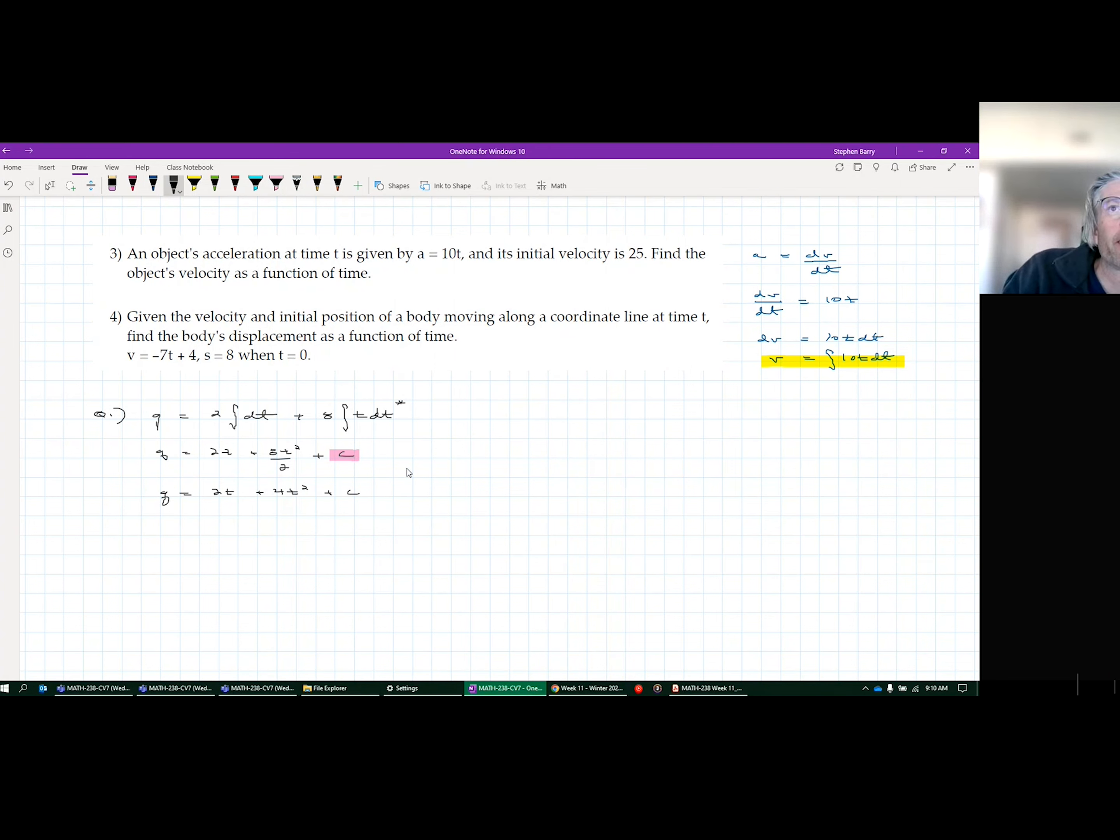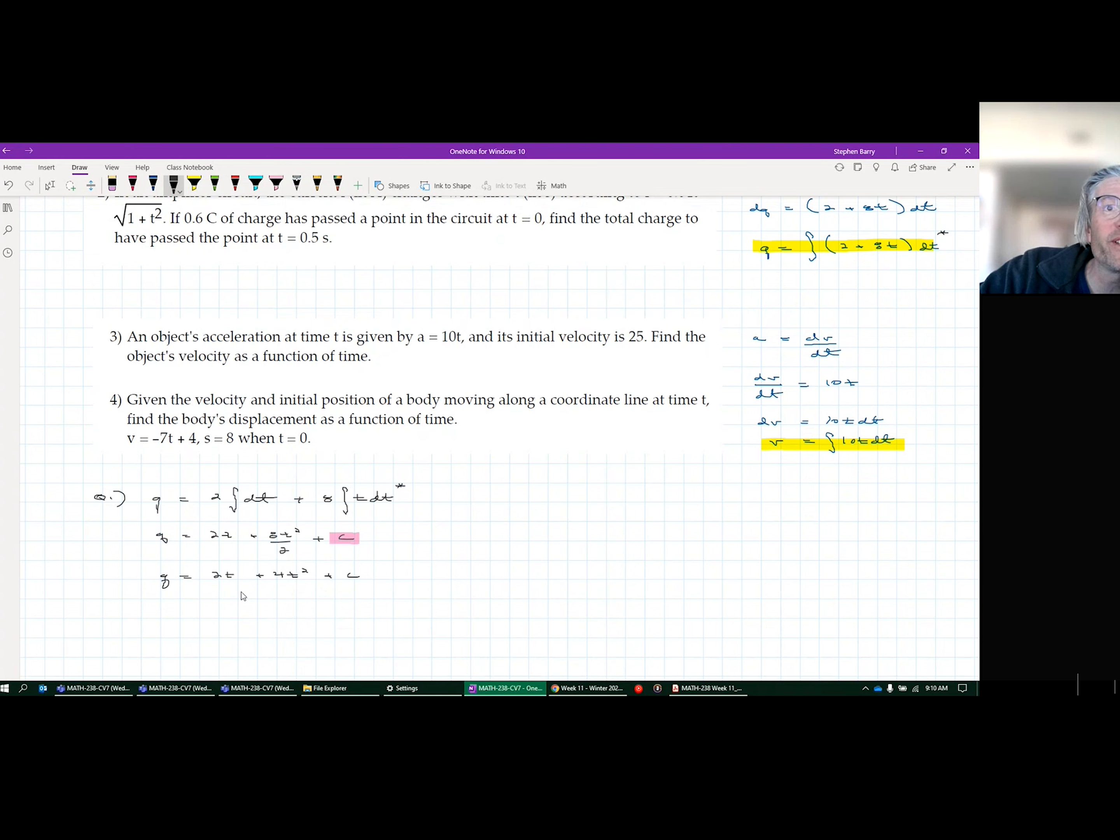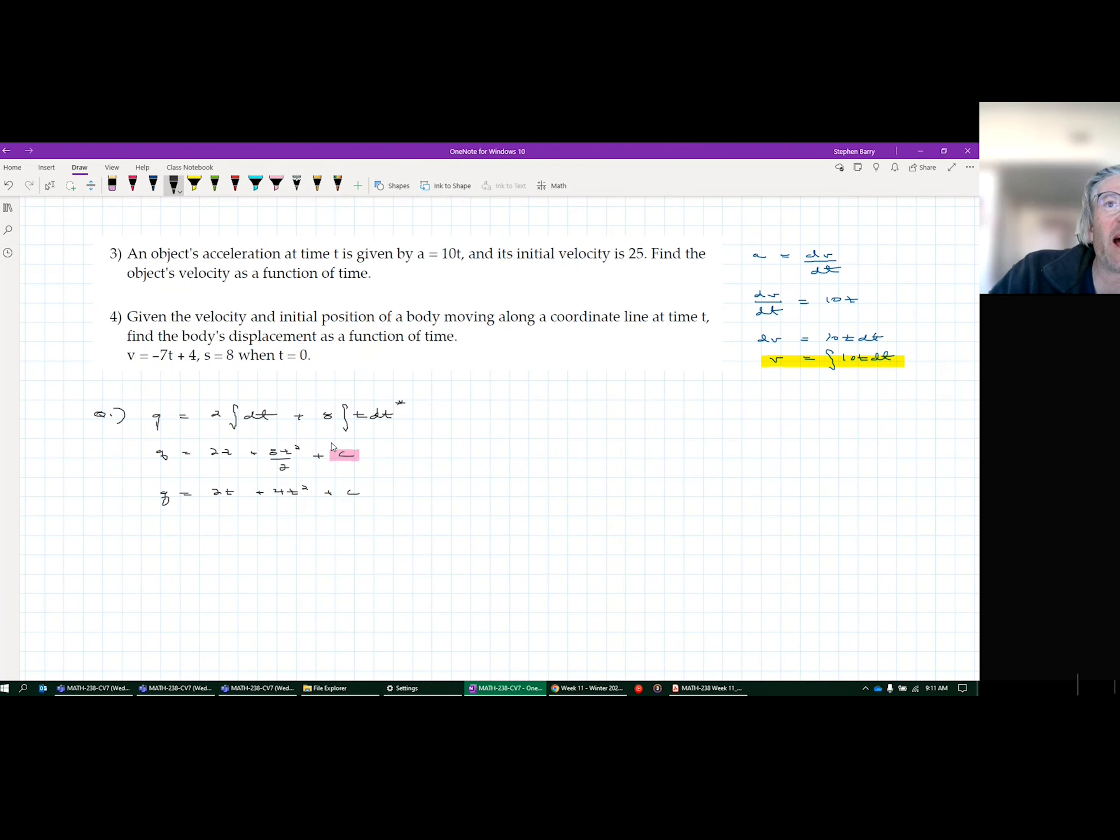In order to solve for C, as we've tried before in the past, you need to have additional information. They just say the question is what total charge passes in seven seconds. So I want to put in seven where T is. That's what I want to do. But before that, I need to figure out what C is. In question two, they give you more information. They say if 0.6 coulombs exists at time zero, then you can go ahead and put in 0.6 for the charge, time for zero and solve for C.